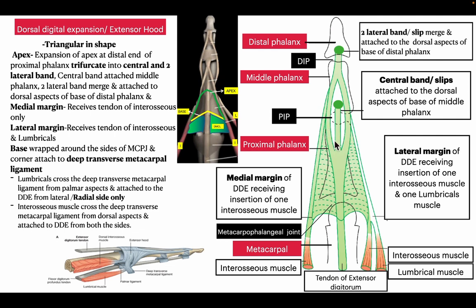The apex trifurcates — it divides into three bands: a central band and two lateral bands on either side. This trifurcation near the apex takes place near the distal end of the proximal phalanges. Both lateral bands join together and attach to the dorsal aspect of the base of the distal phalanges, while the central band attaches to the dorsal aspect of the base of the middle phalanges. The medial margin of the dorsal digital expansion receives the insertion of an interossei muscle, and the lateral margin receives insertions from both interossei and lumbrical muscles.